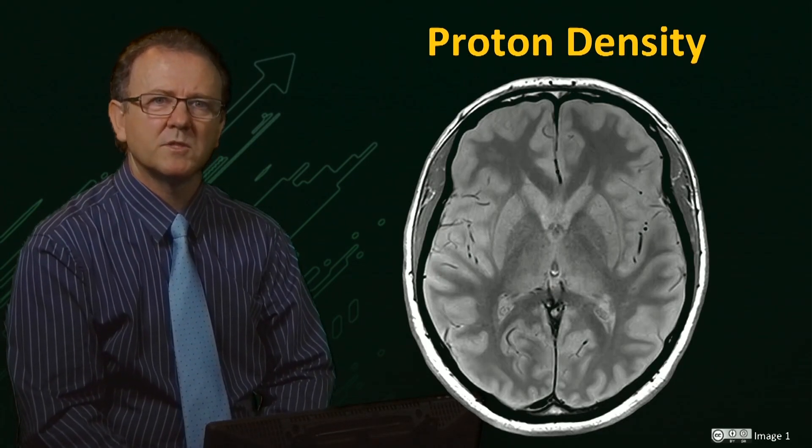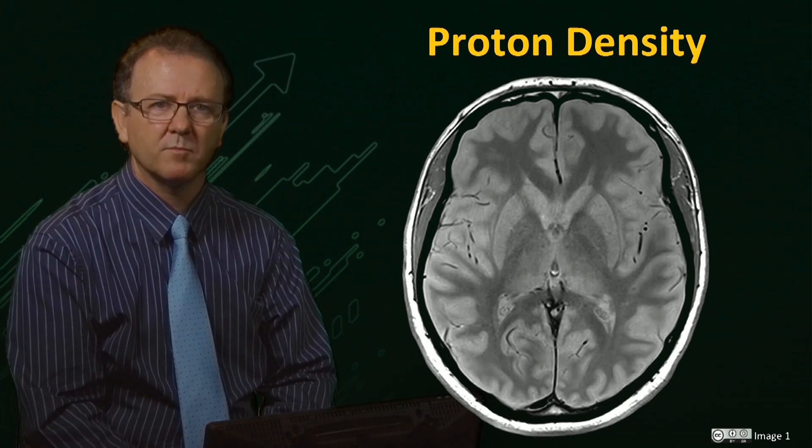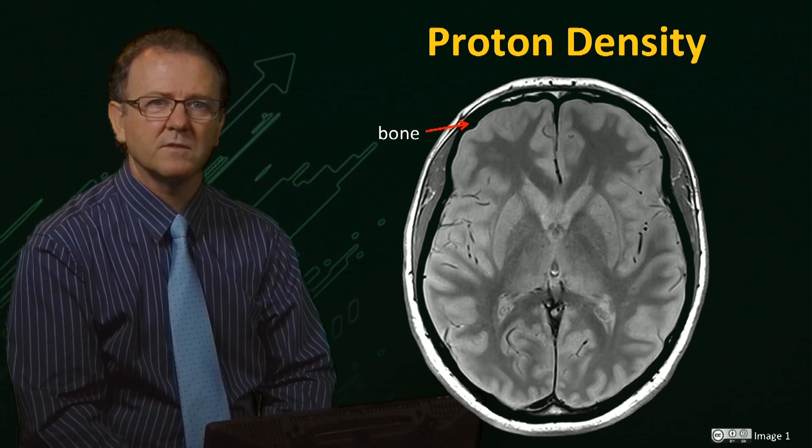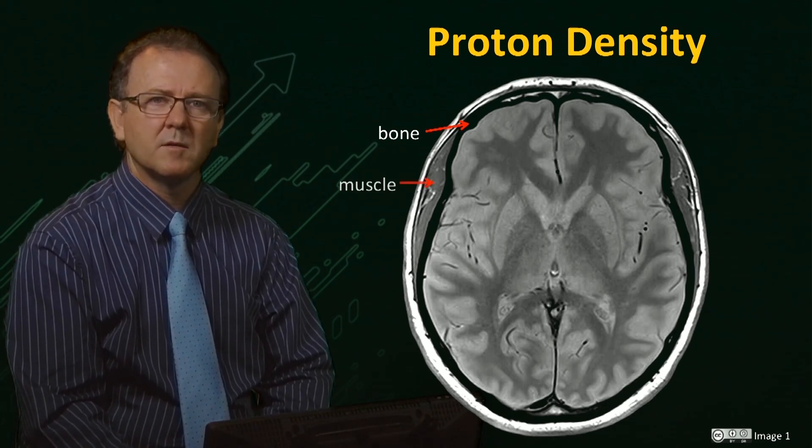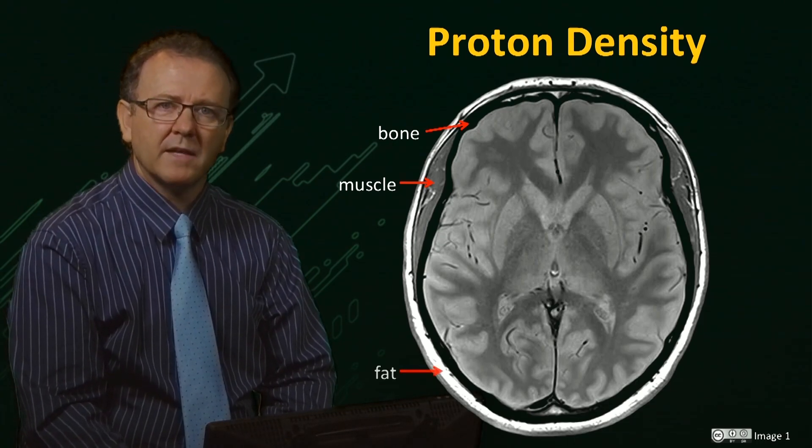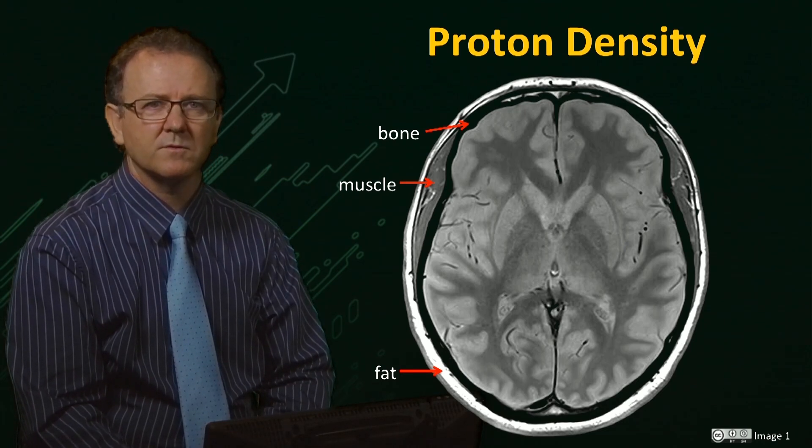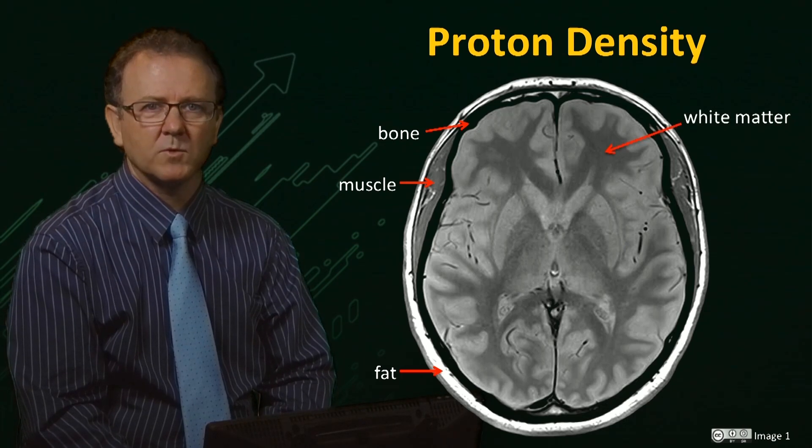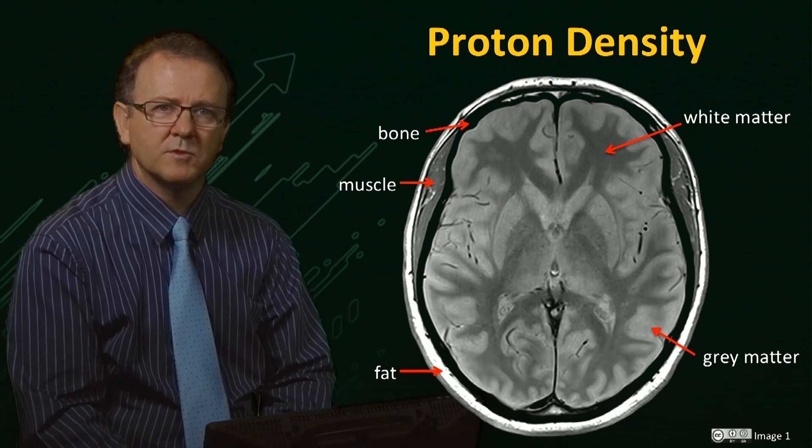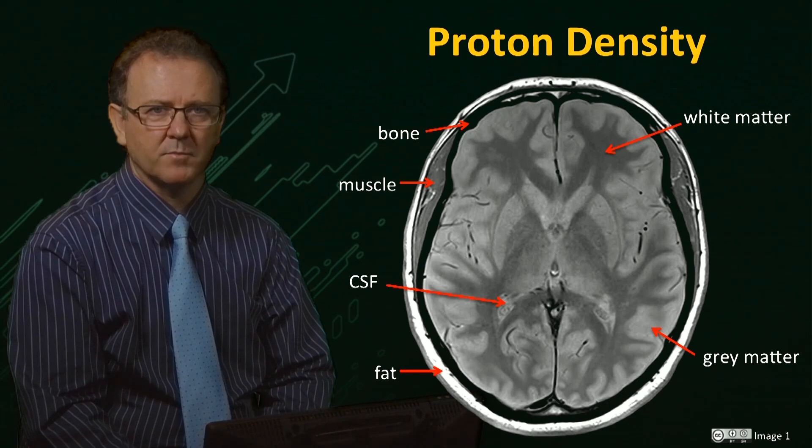Here is an image of the human brain which has been acquired in such a way as to measure the signal only as a function of the proton density. You can see that the bone in the skull produces very little signal and appears very dark. Muscle contains less water than brain tissue and is grey. Fat appears with high intensity due to the high concentration of protons in fat molecules. White matter has less water than grey matter and so appears darker.